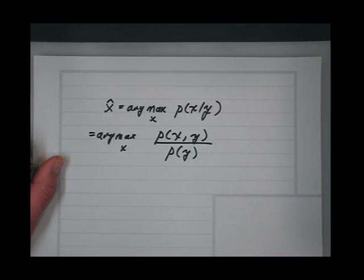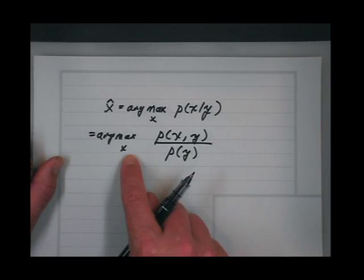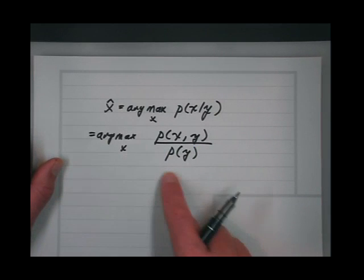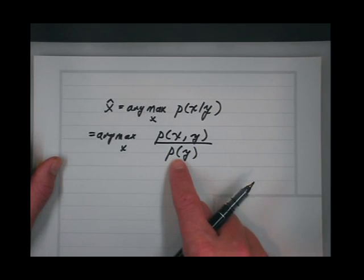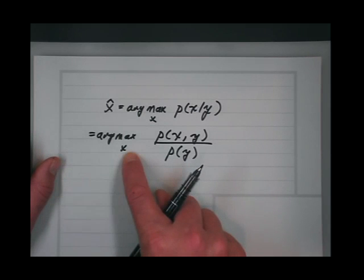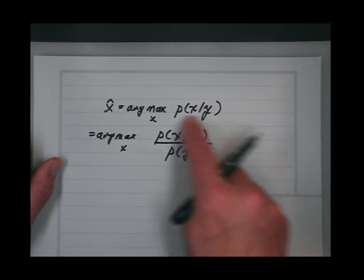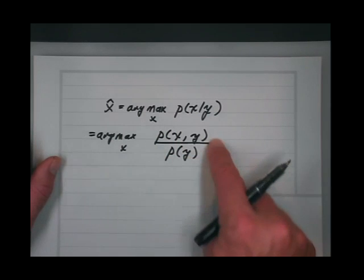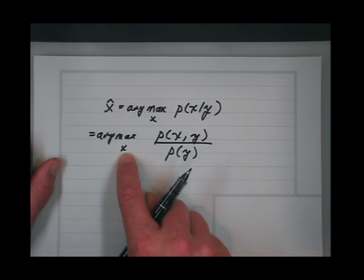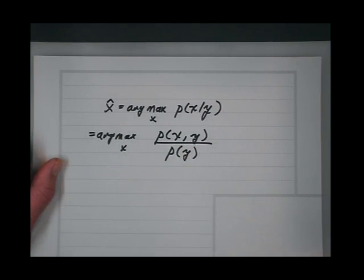The beauty of this is that I don't care about the probability of y, because I'm maximizing over x. I only care about what argument produces that maximum.